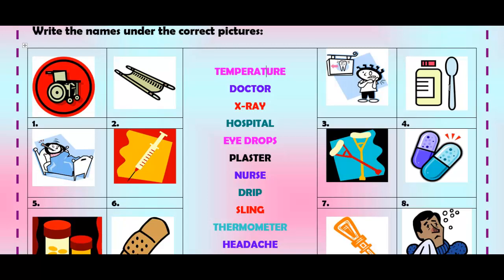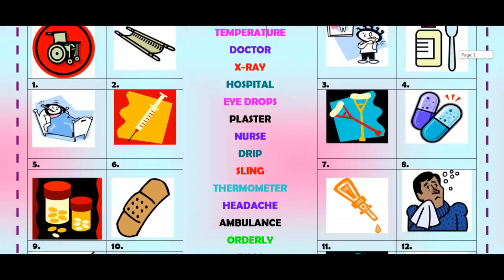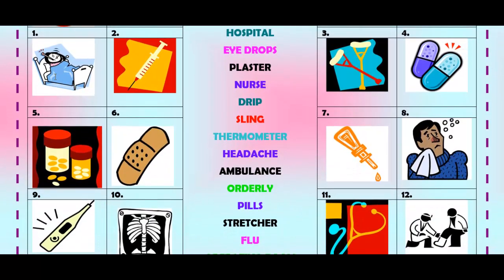When you have a cough, you take a cough syrup — it makes you feel good. Number five, when you're hot, what do you have? You have a temperature.